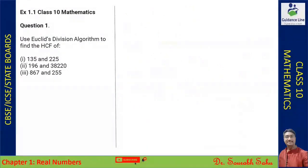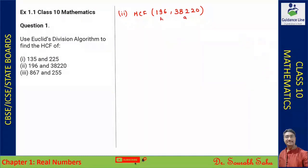The next question asks us to find the HCF of 196 and 38220. Again, 38220 is a and 196 is b. So I write 38220 divided by 196.